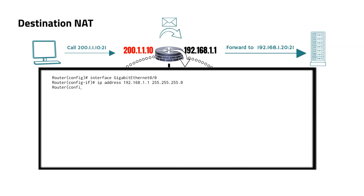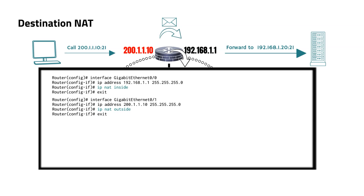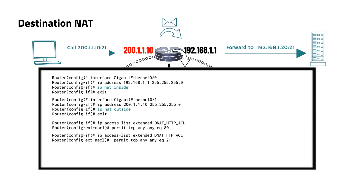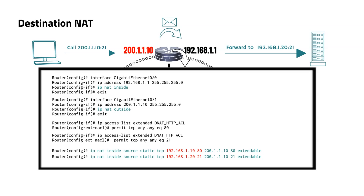To configure destination NAT, similar to source NAT, we first need to specify the inside and outside interfaces. Next, we need to create access lists to specify which traffic should be permitted or denied. Subsequently, we implement destination NAT by mapping an inside local address and port to an outside global address and port. The inclusion of TCP indicates that this mapping is applicable specifically to TCP traffic. Moreover, the 'extendable' keyword allows the router to create more than one static NAT entry for the same internal device without removing existing mappings.